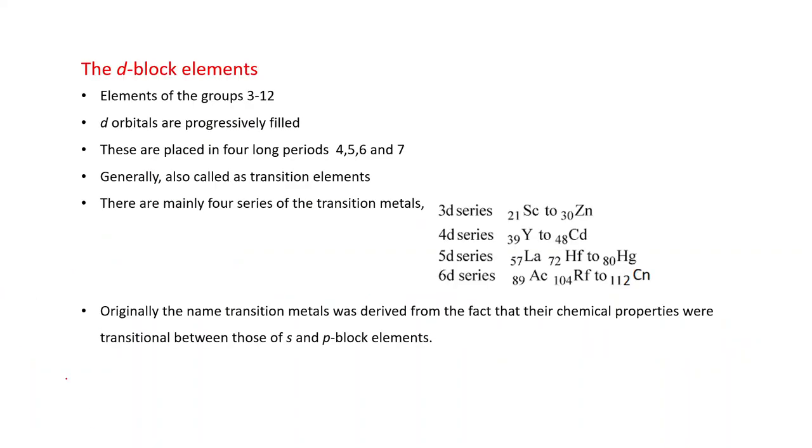First come to the D block elements. Elements of the groups belonging to 3 to 12 of periodic table are known as D block elements. In these elements, D orbitals are progressively filled. The last electron enters in the D orbital and these are placed in four long periods.